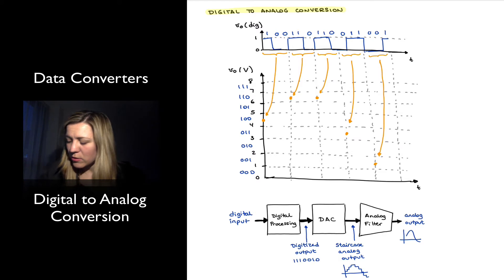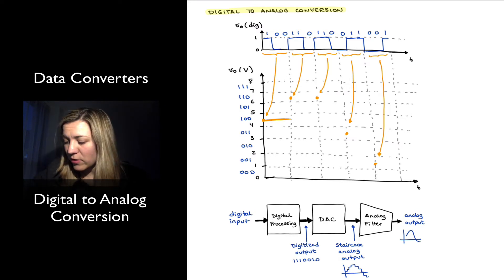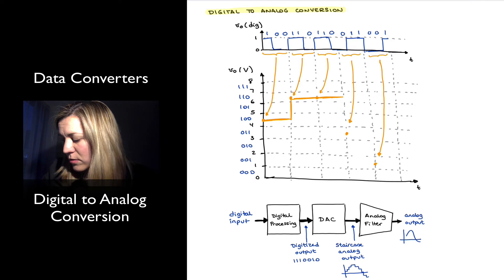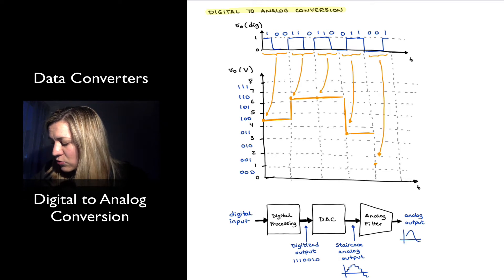And like I said, the DAC doesn't have any information as to the values of the signal in between those points. And so it just provides a straight line until the next available value, a straight line approximation. And so this is what I will end up with, which is typically referred to as a staircase reconstruction of the original analog signal.